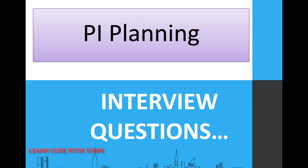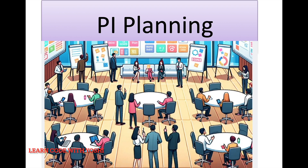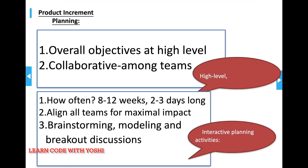Today we'll talk about one more important meeting in real time: PI Planning. PI stands for Product Increment Planning. It is at a more high level, which is strategic, focuses on overall objectives, dependencies, and risk. The PI planning varies from company to company, but overall the objective is the same.